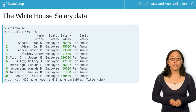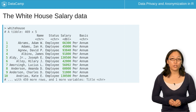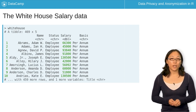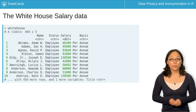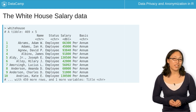One approach is called generalization, where you can convert values into broader categories. Another is top and bottom coding, where you cap or bound the values. To figure out what broader categories to make, or where to bound the values, let's look at the salary values more closely.